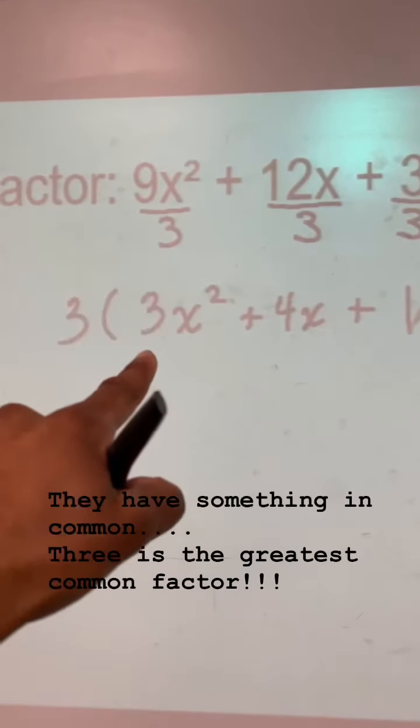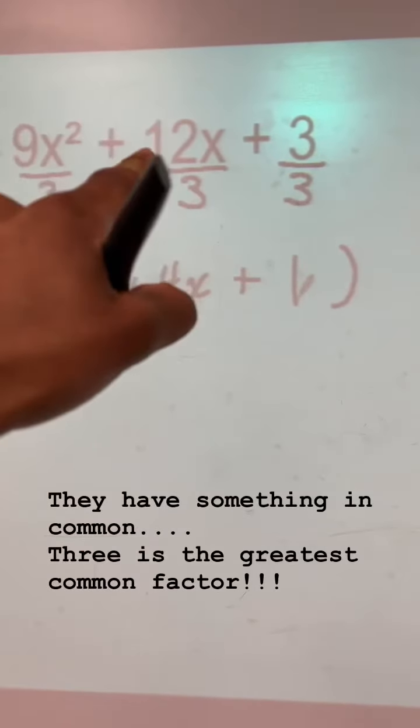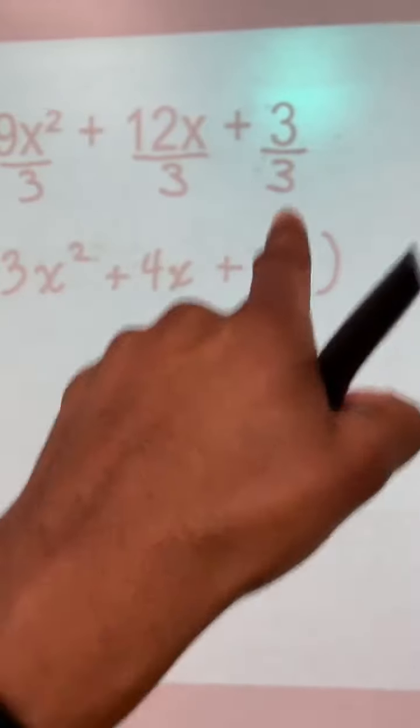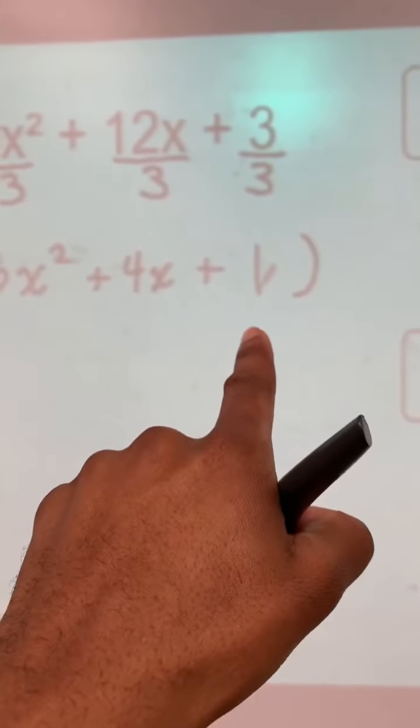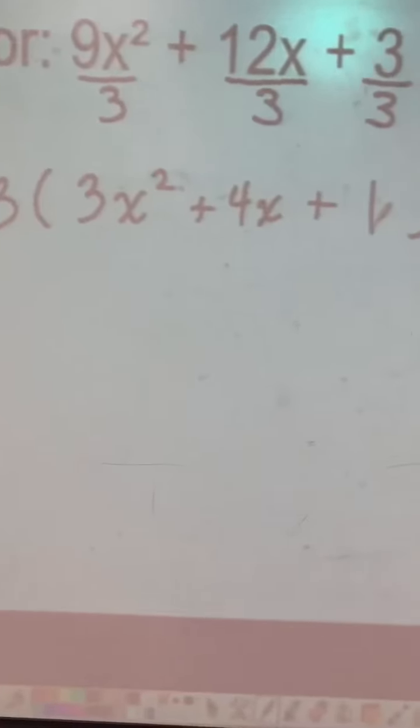9 divided by 3 is 3, x² comes down. 12 divided by 3 is 4, that x comes down. And then 3 divided by 3 is 1. So that's why it looks just like that in those parentheses.